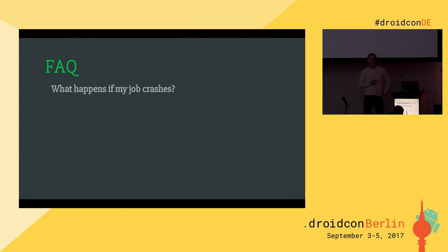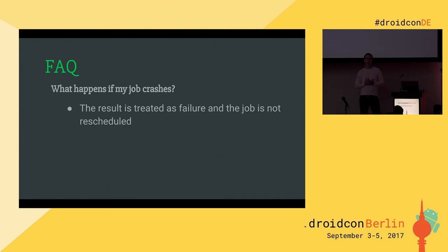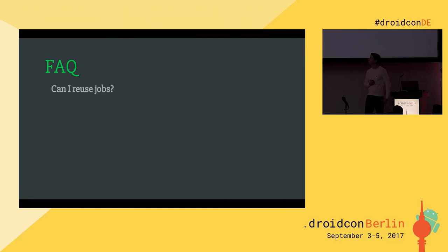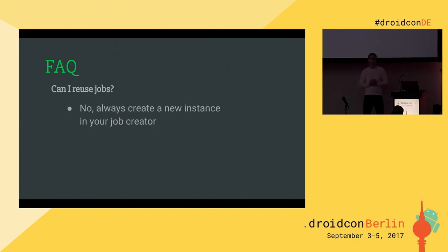What happens if my job crashes? Crashes are treated as a failure, and jobs aren't rescheduled if you return a failure result. If you really need to reschedule your jobs, you should write a big try-catch around your code inside `onRunJob` and return the proper result. If you don't care, you don't need to catch exceptions. Can I reuse my jobs? You should always create a new job — inside your job creator interface when you receive a callback, always create a new instance. If you need heavy initialization, do it inside `onRunJob` which is on a background thread.